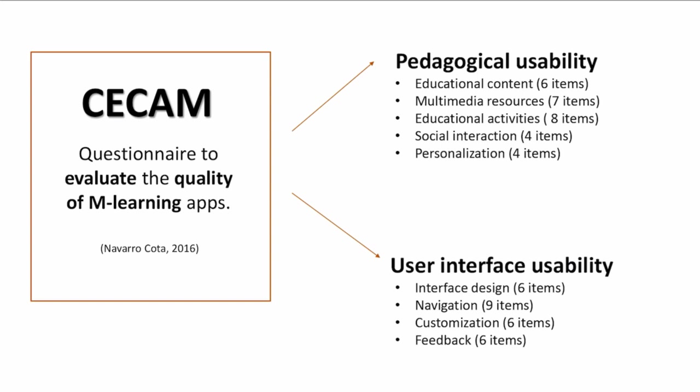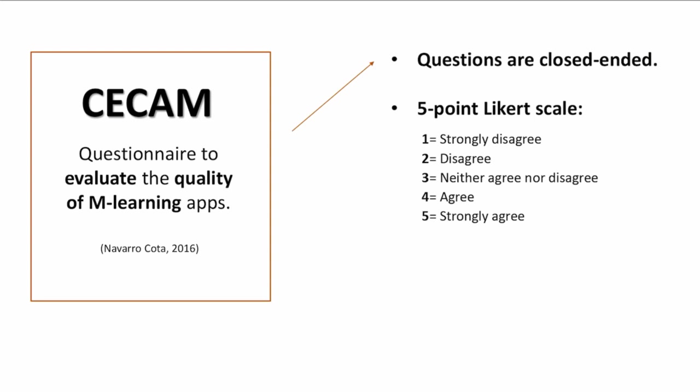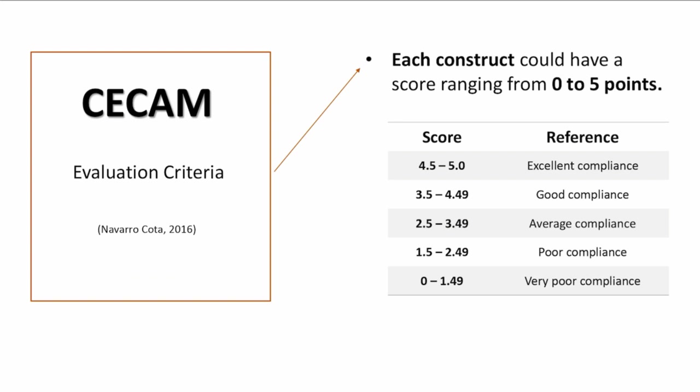To evaluate these factors, several constructs were set and evaluated through a specific number of items. The questions are close-ended and the respondent has to choose one option of a 5-point Likert scale to indicate the extent of agreement. Each construct could have a score ranging from 0 to 5, and the criteria to judge the results are shown in this table.